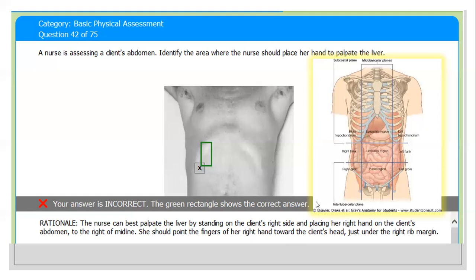A normal liver may be palpated on deep inspiration in very thin people. The explanation: the nurse can best palpate the liver by standing on the client's right side and placing her right hand on the client's abdomen to the right of the midline. The nurse should point the fingers of her right hand towards the client's head just under the right rib margin. This is the right costal margin, left costal margin.